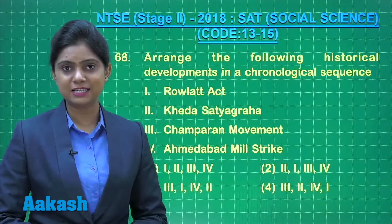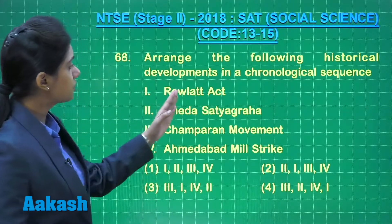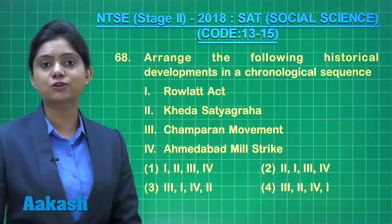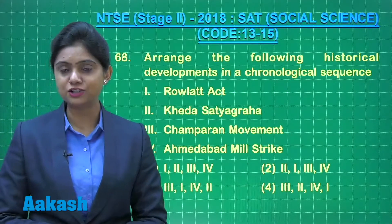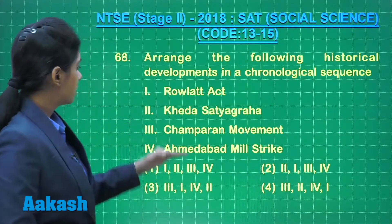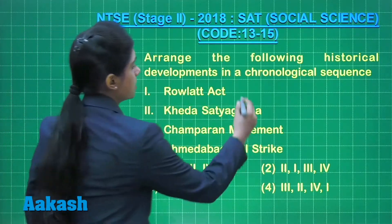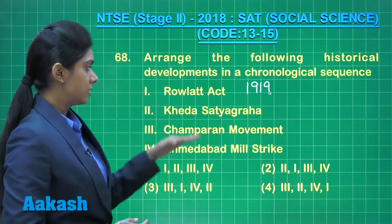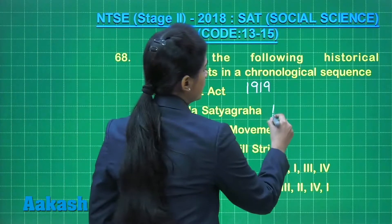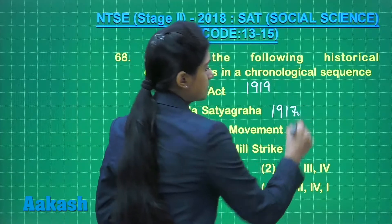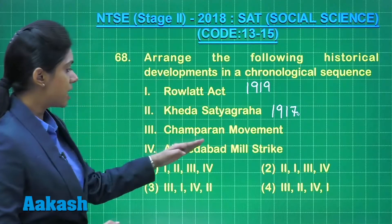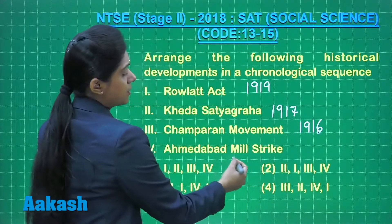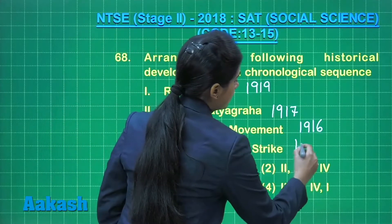Now let's discuss question number 68: arrange the following historical developments in a chronological sequence. In this question we are given a set of four events to be arranged chronologically. The first event is the Rowlatt Act, passed in 1919. The Kheda Satyagraha took place in 1917. The Champaran movement took place in 1916, and the Ahmedabad mill strike in 1918.